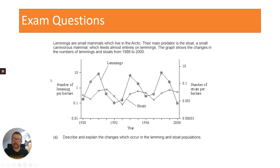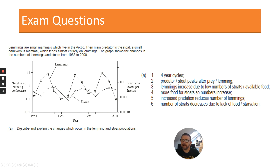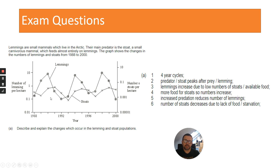So let's have a look at the answers. For describing: you can see there is a four-year cycle. The stoat peaks after the prey — that's the lag — so predator numbers peak after the prey. Lemmings increase due to low numbers of stoats, so as stoat numbers decrease, lemmings increase. There's then more food for stoats, so stoat numbers increase. Increased predation reduces the number of lemmings, and then stoat numbers decrease due to lack of food or starvation. That's the simple description and explanation.